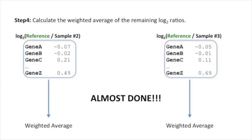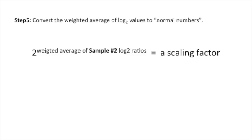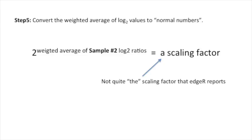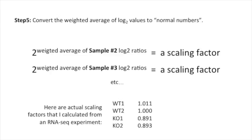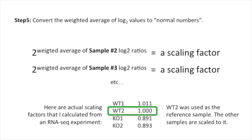Step 5: convert the weighted average of the log two ratios to normal numbers — that is, raise two to the weighted average of the sample two log two ratios. That gives us a scaling factor. We also calculate a scaling factor for sample three and continue for all samples in the dataset. Here are actual scaling factors calculated from an RNA-seq experiment. We see that WT2 was used as the reference sample, and the other samples were scaled to it.